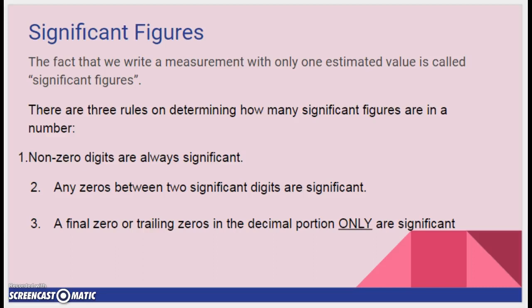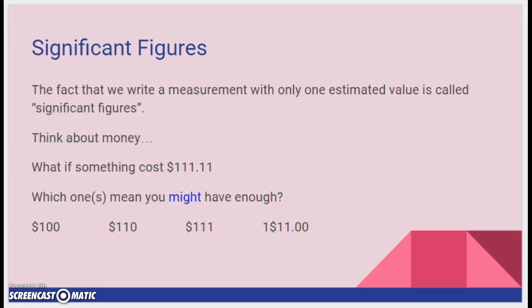This is part 2 of 1.09 significant figures. The fact that we write a measurement with only one estimated value is basically because of significant figures.